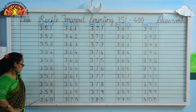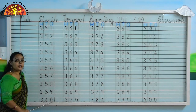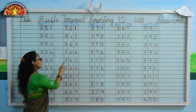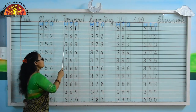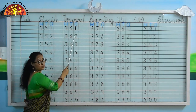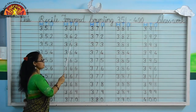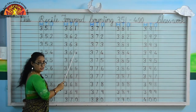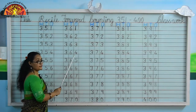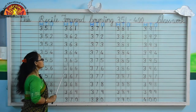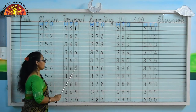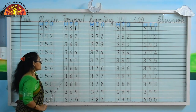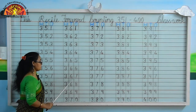Kids, what comes after 360? Yes, 361. 361, 362, 363, 364, 365, 366, 367.